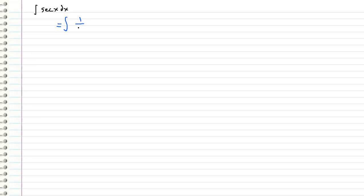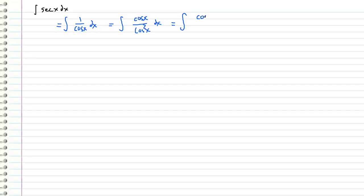I'm going to start off by rewriting this as 1 over cosine x dx, and this is just the definition of secant. And then I'm going to rewrite it a little more using some cleverness — I'm going to write it as cosine x over cosine squared x dx. The reason I want to do that is because I can now use a trig identity on the denominator, and so I can rewrite it as cosine x over 1 minus sine squared x dx. This step just comes from the fact that cosine squared x plus sine squared x equals 1.